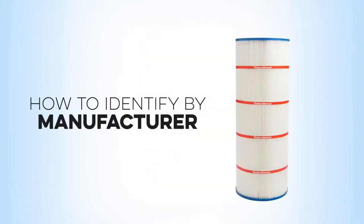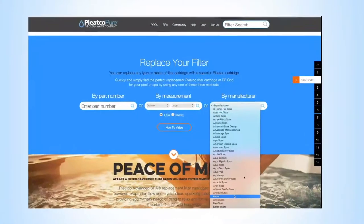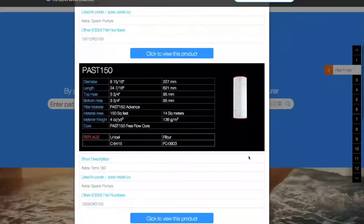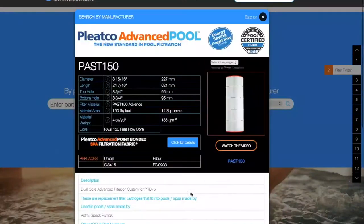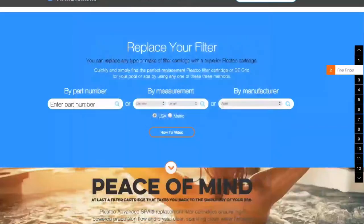A final solution to finding the correct replacement filter is to use the Pleatco filter finder and select by manufacturer. This is mainly helpful for spa and hot tub owners. Choose the manufacturer of your spa or pool from the drop-down menu and scroll through the selection to find the correct replacement.